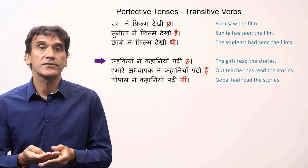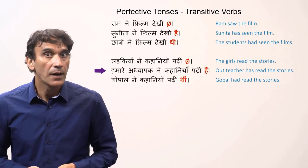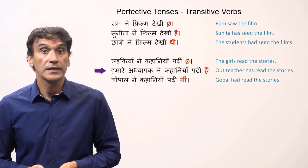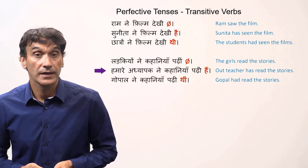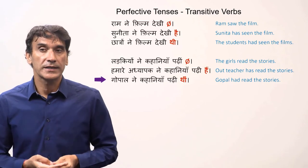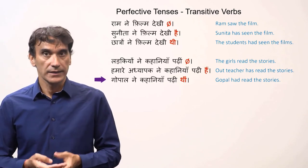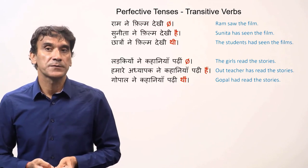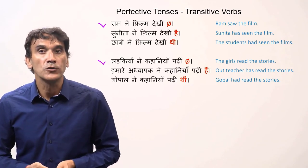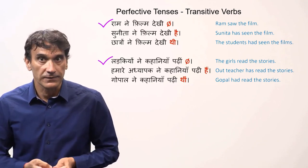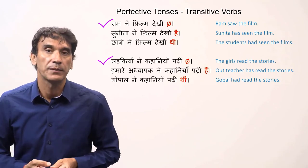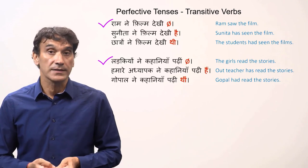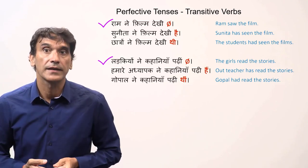Similarly: Ladkiyon ne kahani padhi — the girls read the story (simple past). Hamare adhyapak ne kahaniyan padhi hain — our teacher has read the stories (present perfect). Gopal ne kahaniyan padhi thi — Gopal had read the stories (past perfect). Please do not worry about these different types of perfective tenses — you will use the simple perfective most of the time, as the context overwhelmingly demands the simple past in Hindi as well as in English.